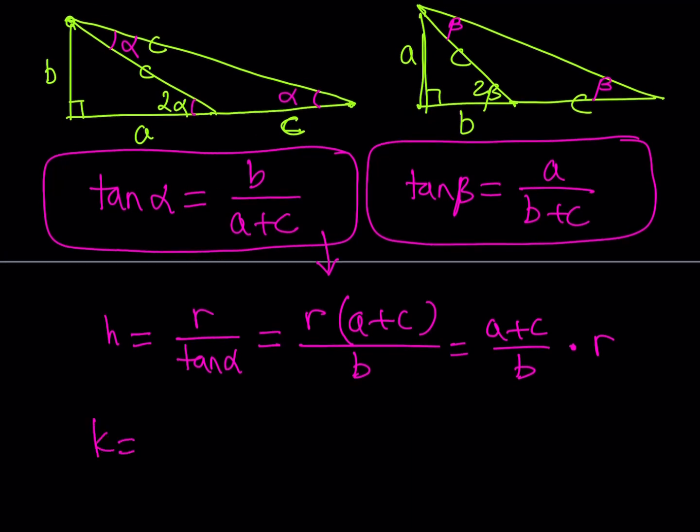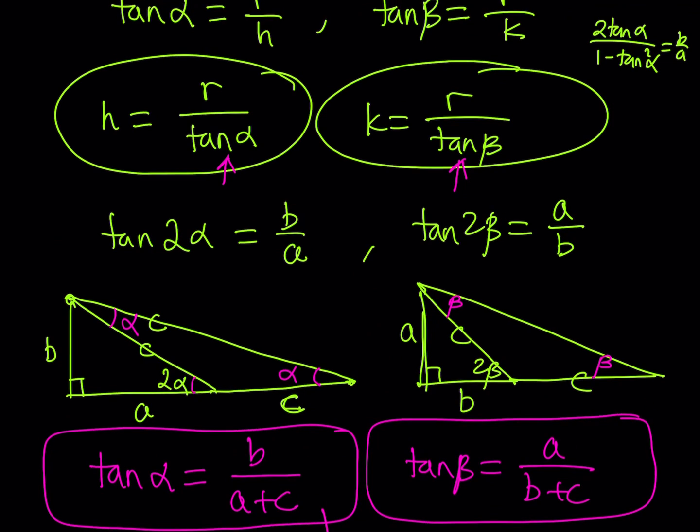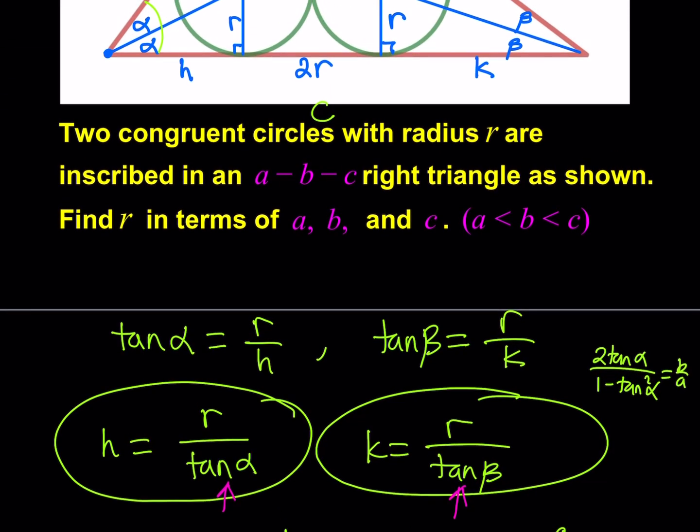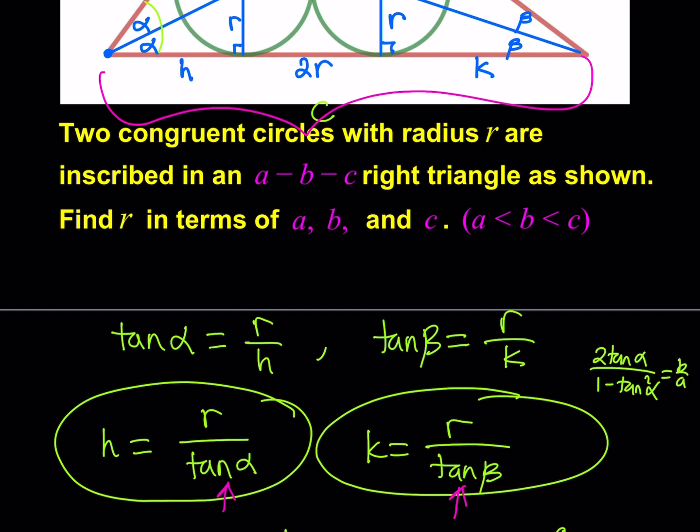Remember, K was written as R over tangent beta. If you divide R by tangent beta, which is A over B plus C, you're going to get R times B plus C over A, which can be written as B plus C over A multiplied by R. Beautiful. Now, I got the value of H. I got the value of K. Now, it's time to put those together. How do you put those together? Well, they are the pieces that make up the base. Their sum is equal to C. Awesome. Let's go ahead and do that.